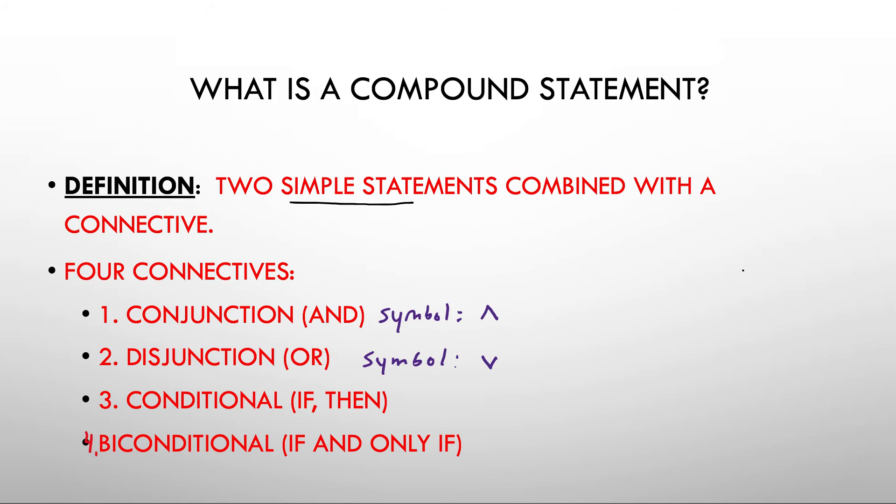For the conditional, your symbol is going to be an arrow, and that makes sense because you're looking at if then this conclusion is met. And finally, for your biconditional symbol, you're going to use a line that has an arrow on both ends. So you want to go ahead and become familiar with those symbols, but like I said, in the next section we'll be using those to work some problems.